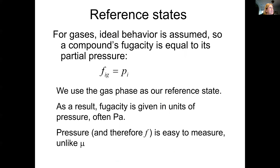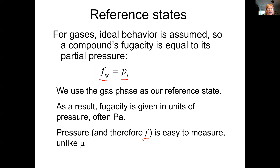We need a reference state, and typically that's the gas phase. The fugacity, lowercase f, is defined as the partial pressure of the chemical in the gas phase that would be at equilibrium with whatever phase you're dealing with — whether it's water, sediment, or whatever. Pressure and therefore fugacity is measurable, unlike chemical potential mu, which is not measurable. That's why we use fugacity: you measure it in pascal units, compare it between compartments, and determine which way the chemical wants to flee.